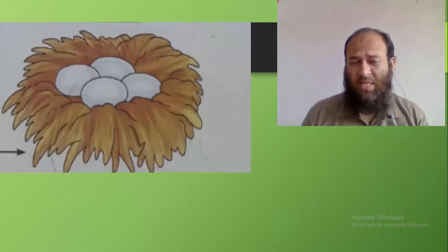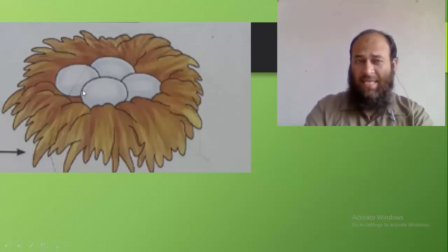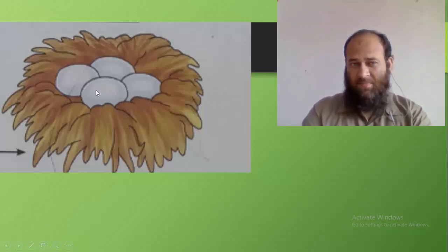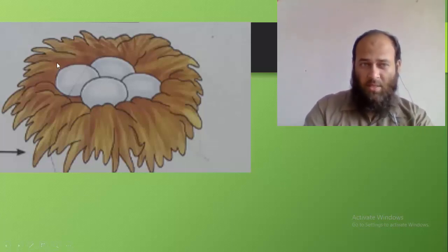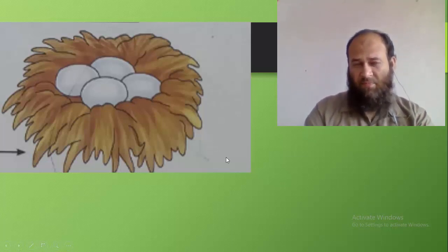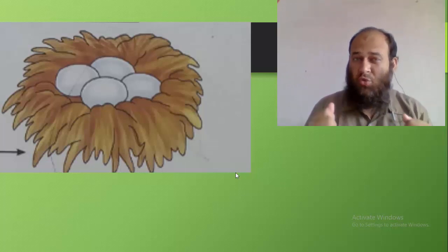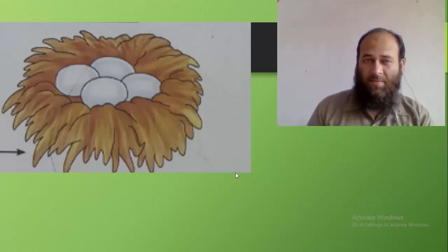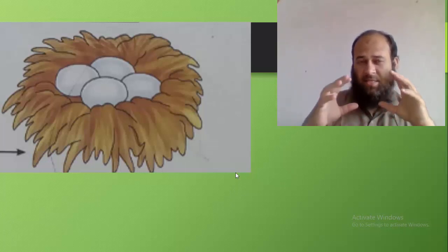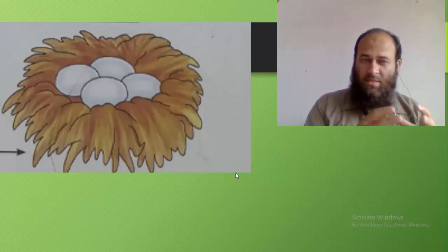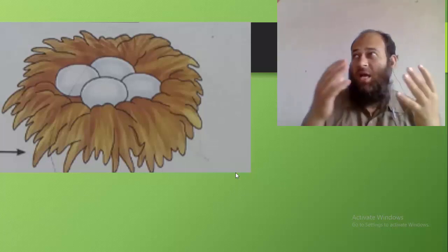What do you see here on the screen? It is a nest. What do you think is in this nest? These are eggs. And how many eggs? One, two, three, and four. Can you tell me something more about this nest? Can you describe this nest? It is a small nest. It has four eggs in it. It is brown in color. It might be kept on a tree like this. You have to describe things that you see around.